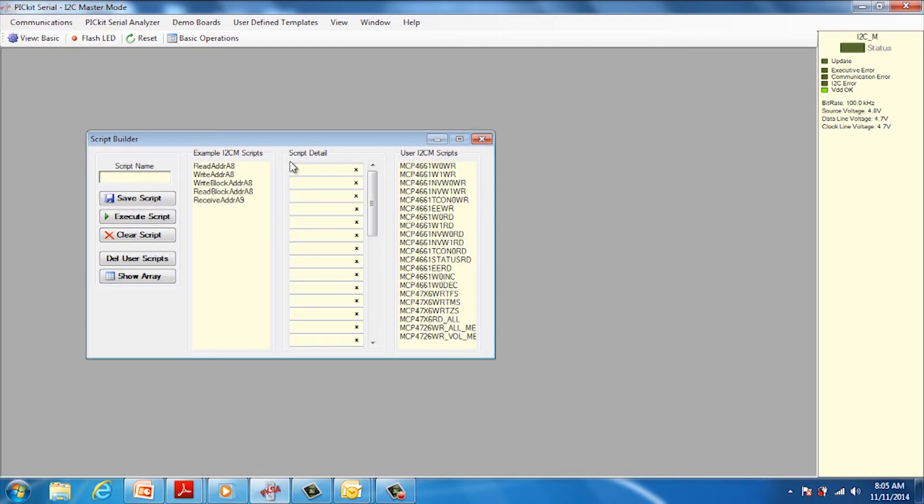On the right side, double-click the script titled MCP4726 Write Volatile Memory. Then click the Execute Script tab. This command writes the Volatile DAC register to full scale.